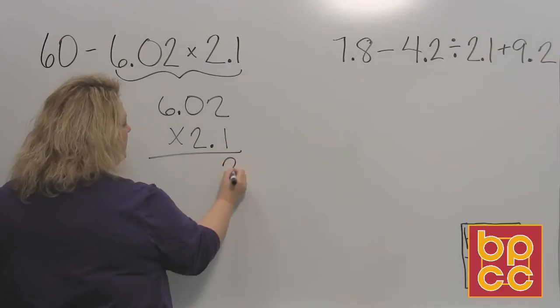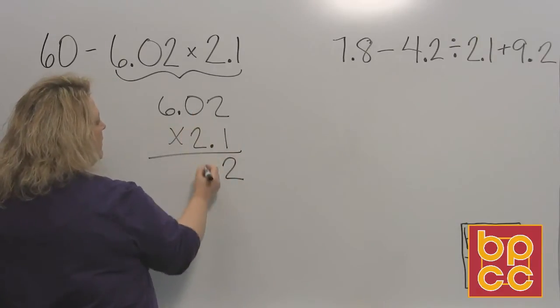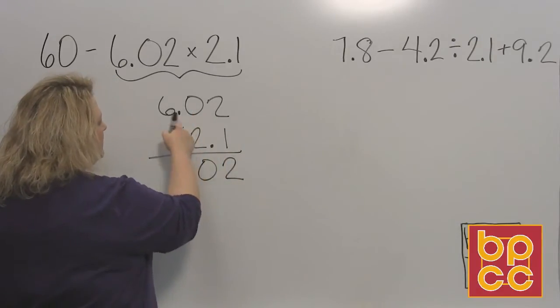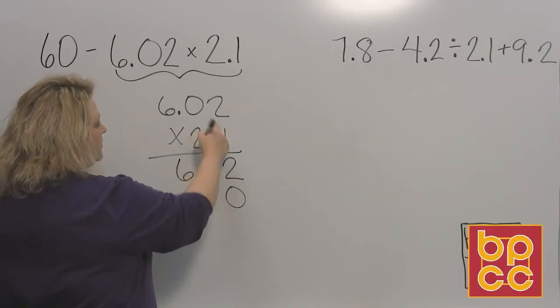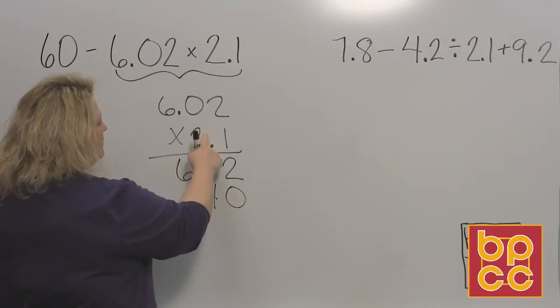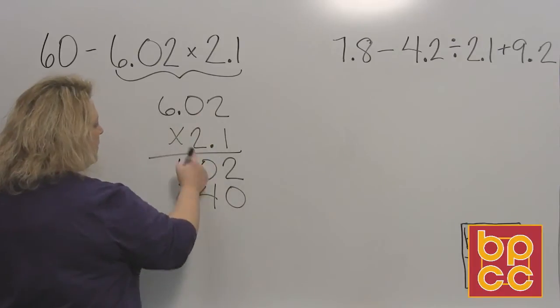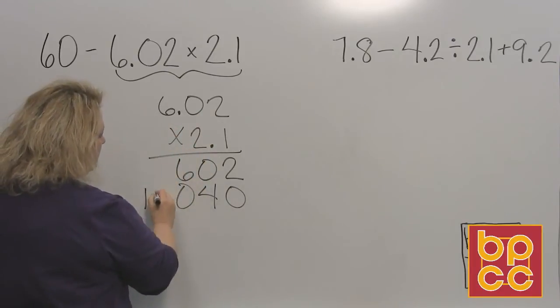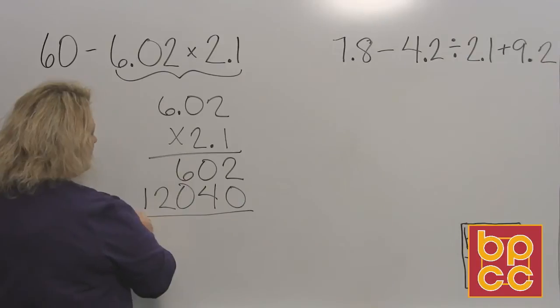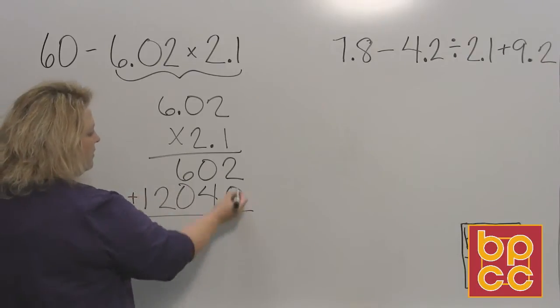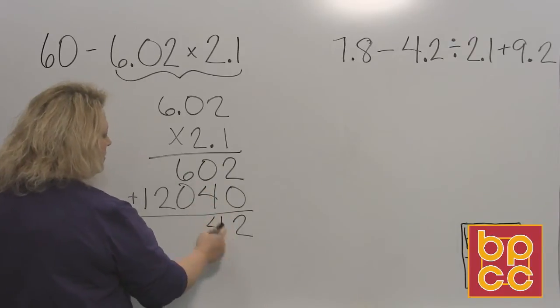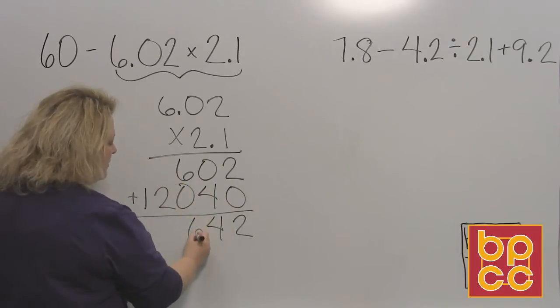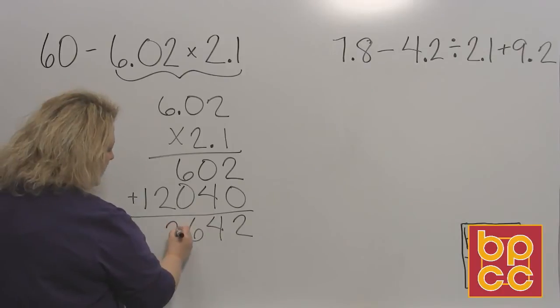So let's multiply. One times two is two. One times zero is zero. One times six is six. Put your placeholder. Two times two is four. Two times zero is zero. Two times six is twelve. Okay? Do the addition next. Two plus zero is two. Zero plus four is four. Six plus zero is six. And the other two you just bring down.